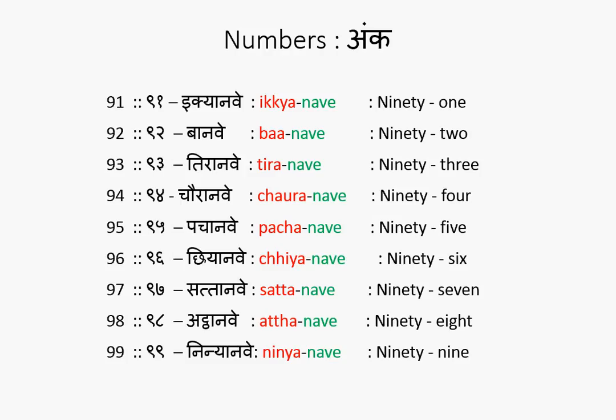And lastly, 100 is Sao. Simply, Sao. Sao is 100. Ikyaanve, Baanve, Tiraanve, Chaoranve, Pachanve, Chiyanve, Sataanve, Athaanve, Ninnyanve, Sao.